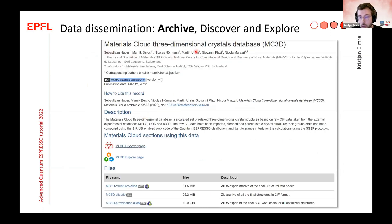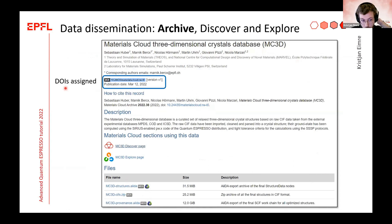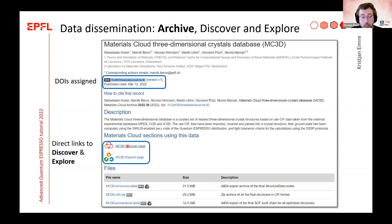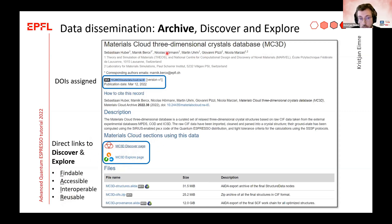I want to go into detail using the example Marnik gave: MC3D, the Materials Cloud Three-Dimensional Crystals database, which was calculated with AiiDA workflows. Here is the archive entry for MC3D. There is a DOI and you can upload the raw files of your calculations. Researchers can also build a Materials Cloud Discover and Explore page, which are ways to make your data adhere to the FAIR standard that is sought in this field.